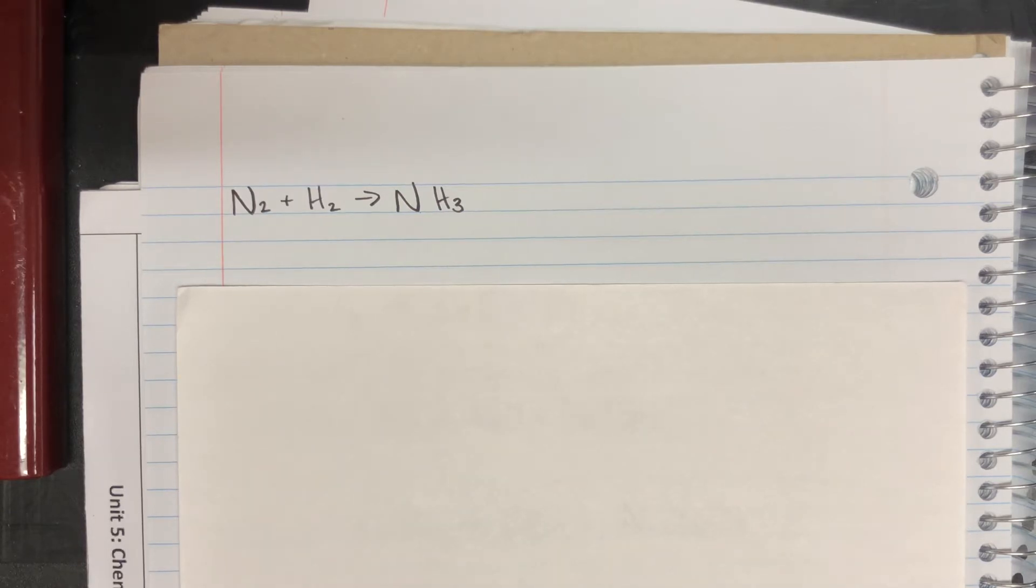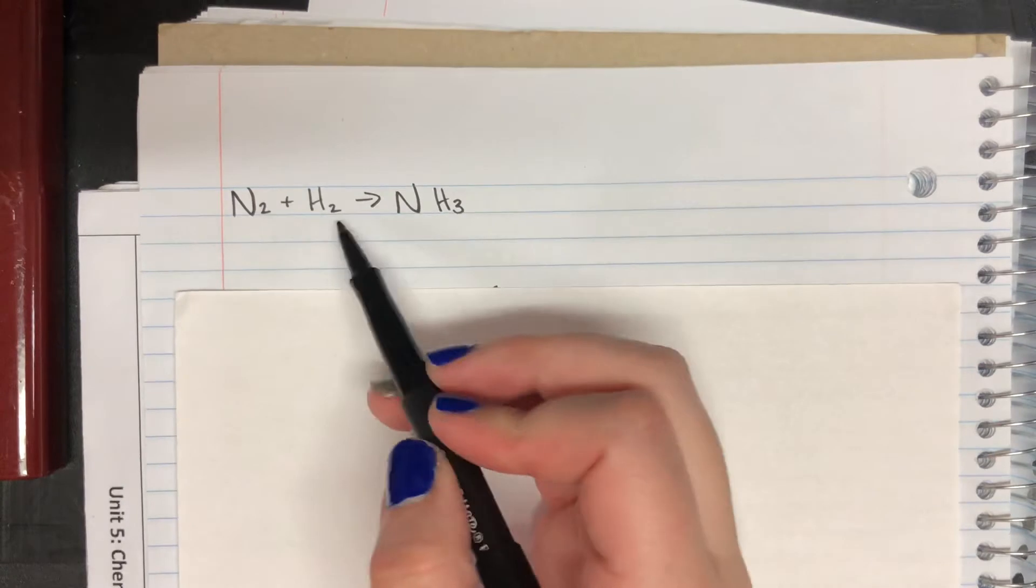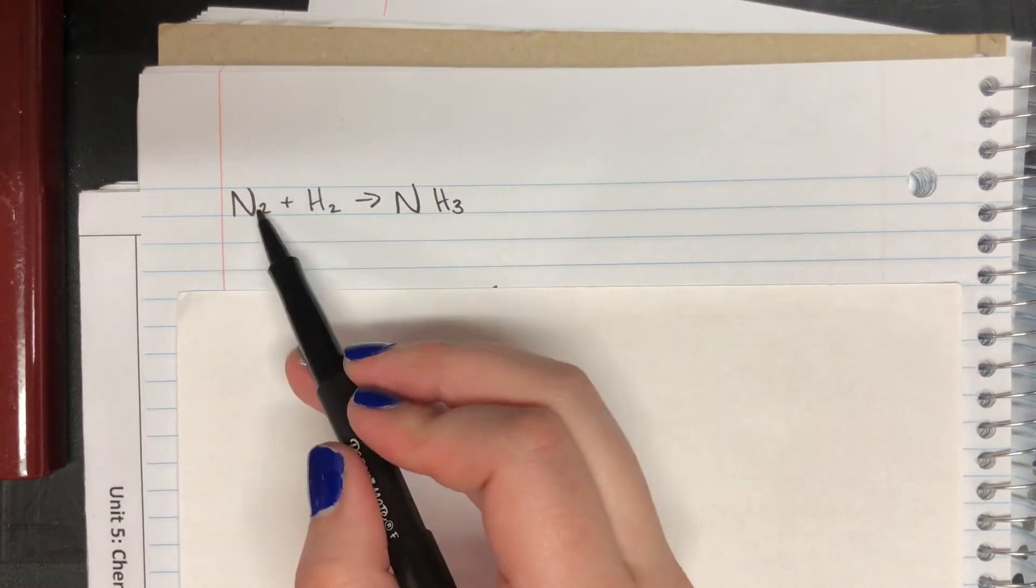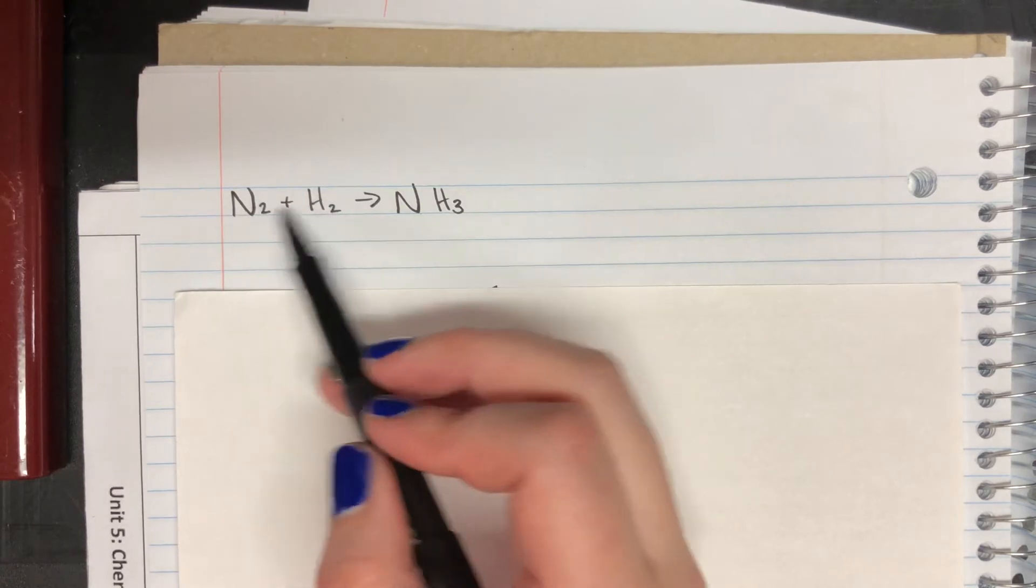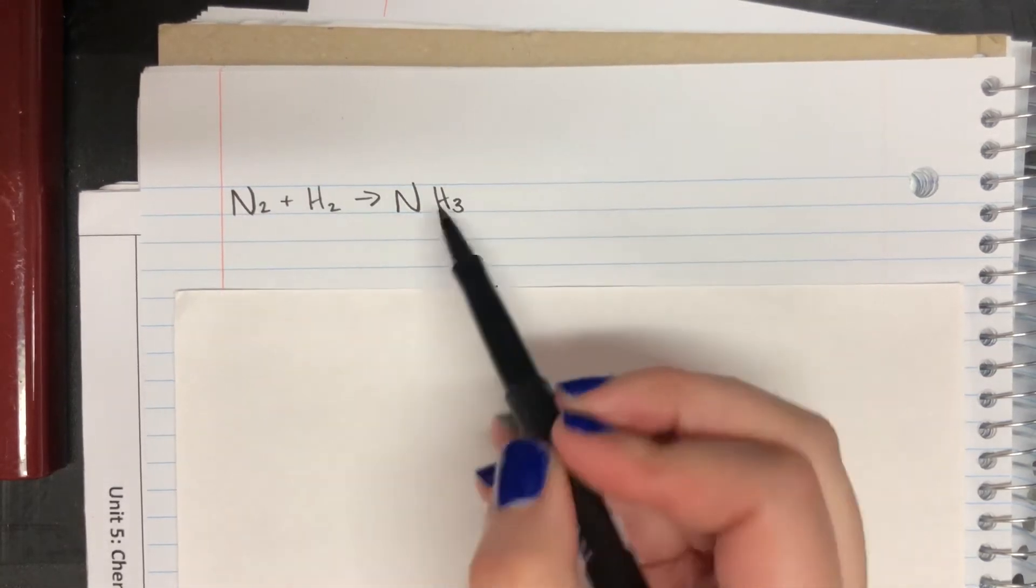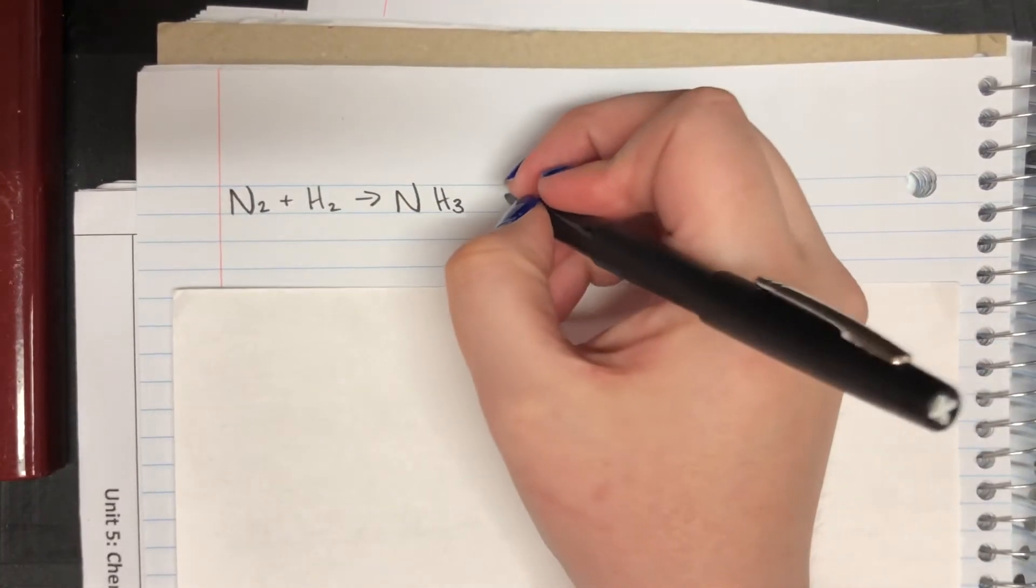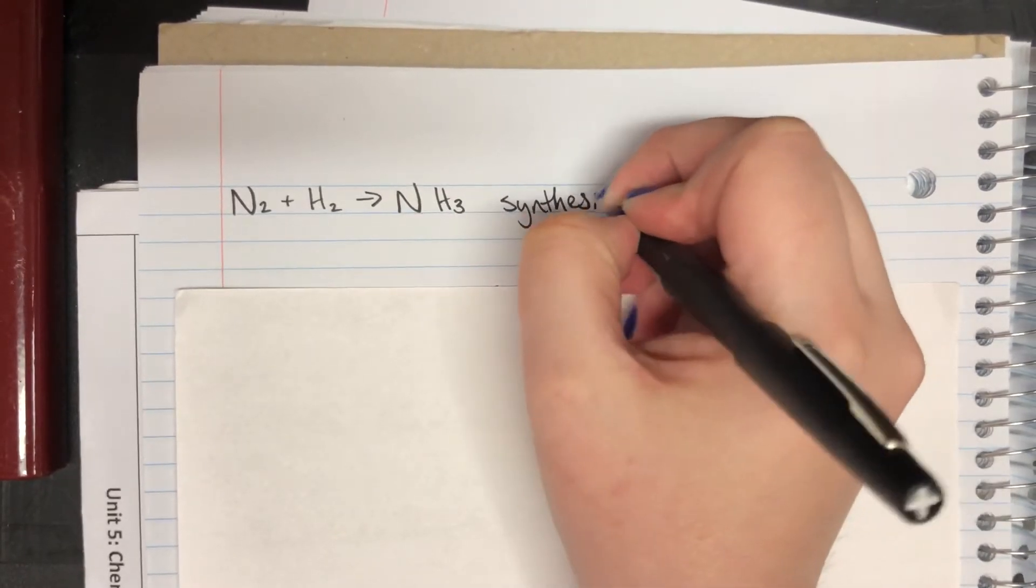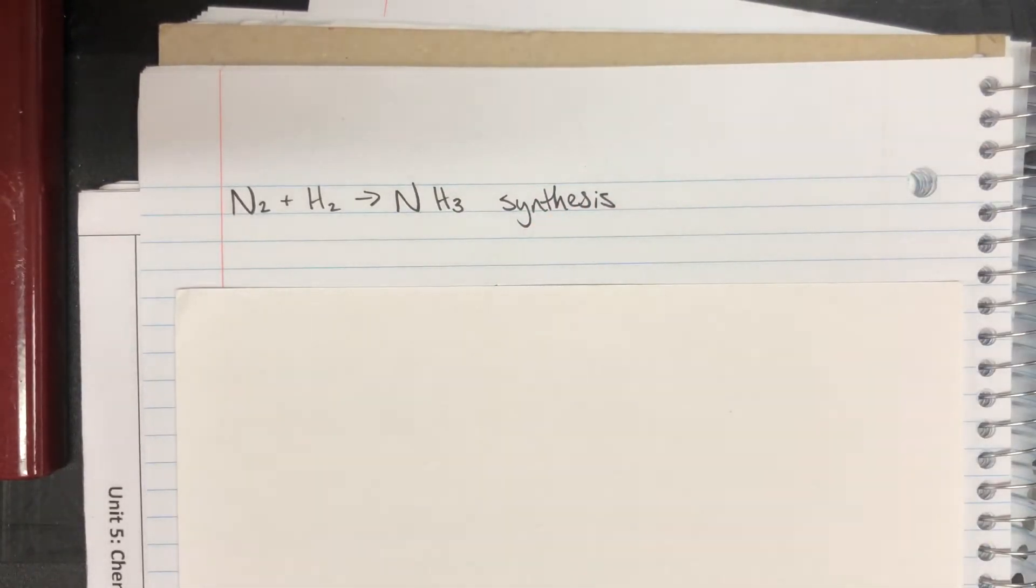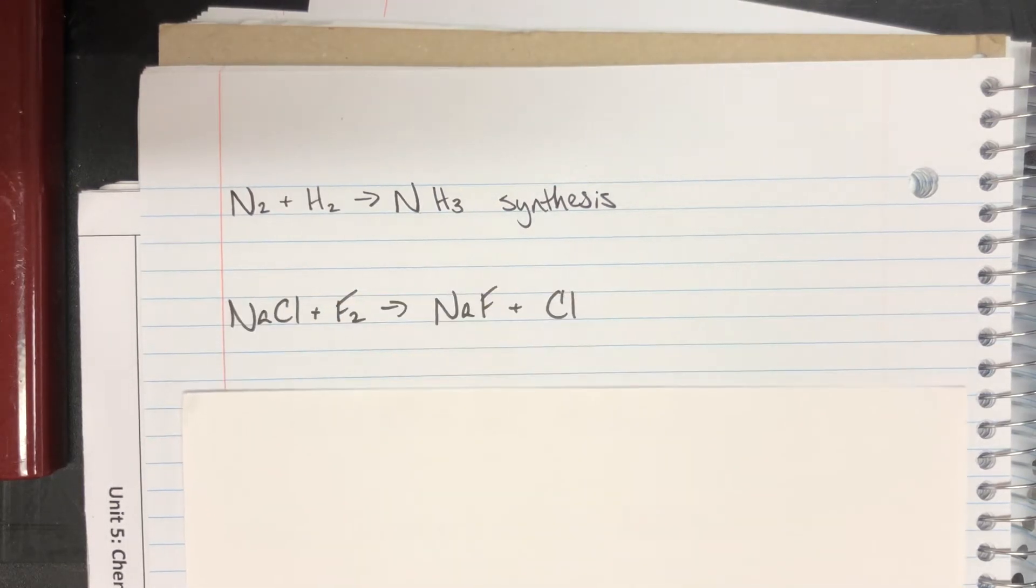But we are going to just go ahead and type them. What kind of reaction is this? So I have two single elements coming together. Now these are diatomic elements, but they are not bonded to anything else, so they are referred to as single. So we have two singles coming together to form one thing. This is going to be a synthesis reaction. I have two or more reactants coming together to form a single product, so that is synthesis.